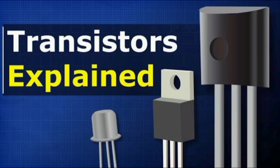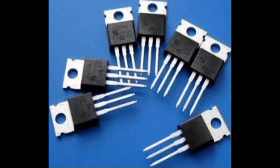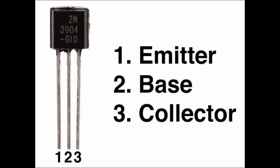Welcome back. In this video we are going to see about transistors. Transistors are an important topic in electronics. See this image — this is how a transistor looks like. A transistor is a semiconductor device. It has three layers, three terminals, and two junctions. Transistors are used for amplification and as a switching device.